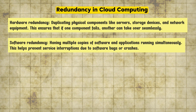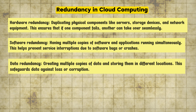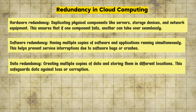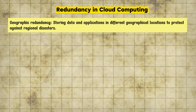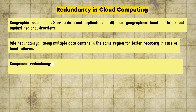Redundancy can be implemented at various levels. First, hardware redundancy — duplicating physical components like servers, storage devices, and network equipment. Second, software redundancy — running multiple copies of software and applications simultaneously. Third, data redundancy — creating multiple copies of data and storing them in different locations. As for types of redundancy, there is geographic redundancy, site redundancy, and component redundancy.